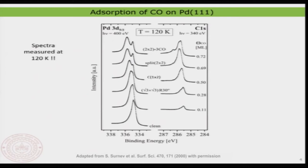Now we will look into a few examples to understand how we can use XPS to understand chemical structure at interfaces. Here I am taking an example of carbon monoxide molecules adsorbing on different surfaces — first on palladium 111, and later we will make a comparison on nickel 111. These are two reactive surfaces. Nickel and palladium are quite reactive and widely used as catalytic materials. For example, if you want to crack carbon monoxide or carbon dioxide, you can adsorb them on palladium 111 surface and it helps in cracking them.